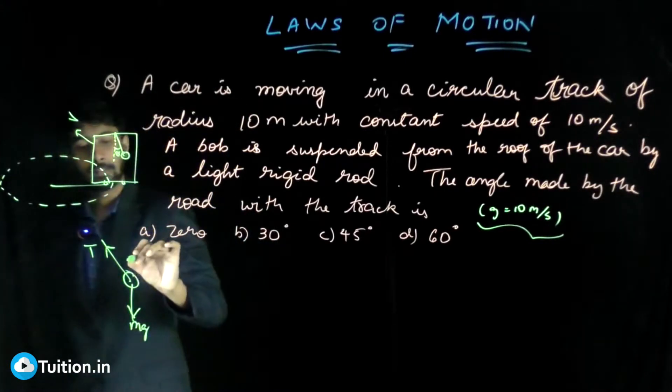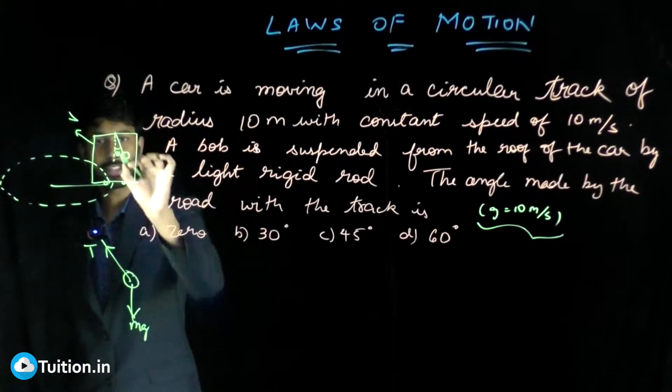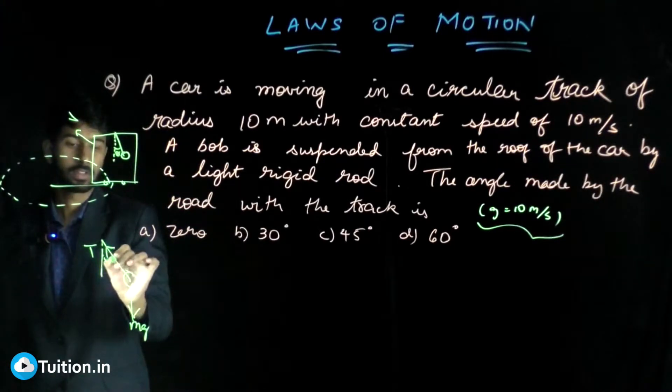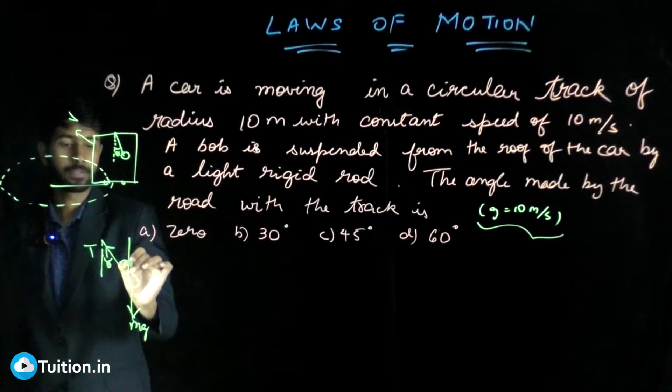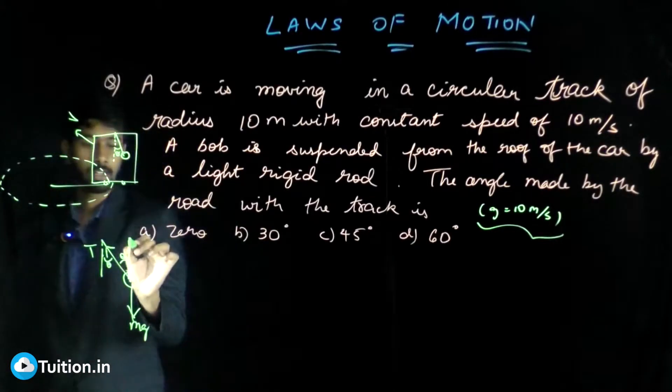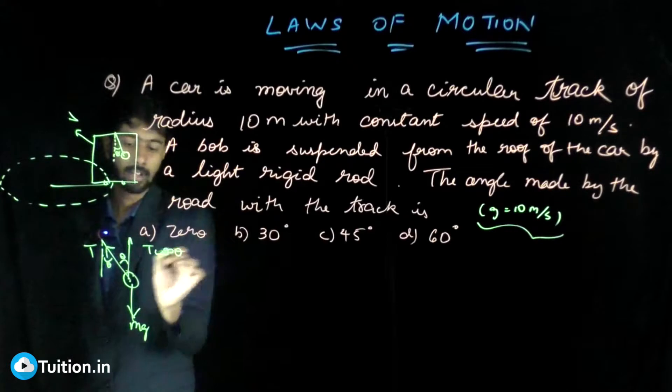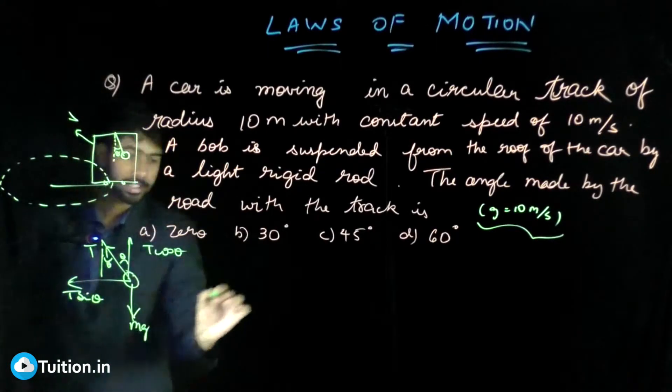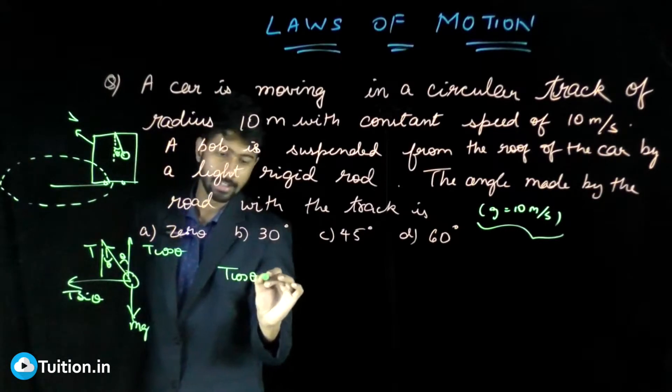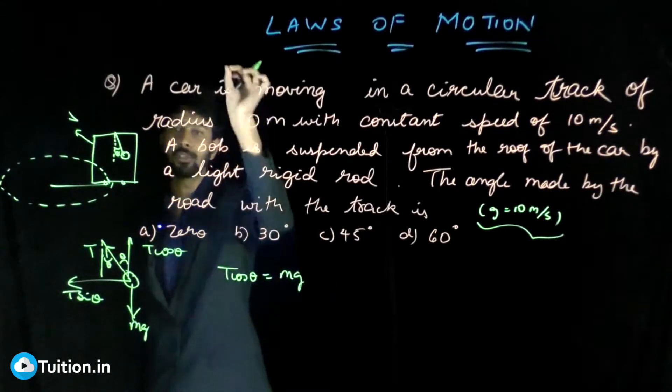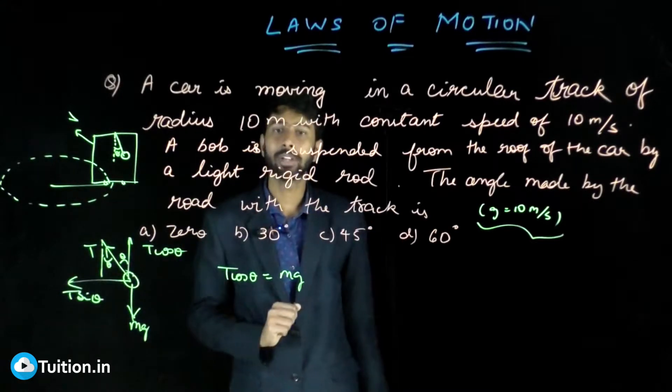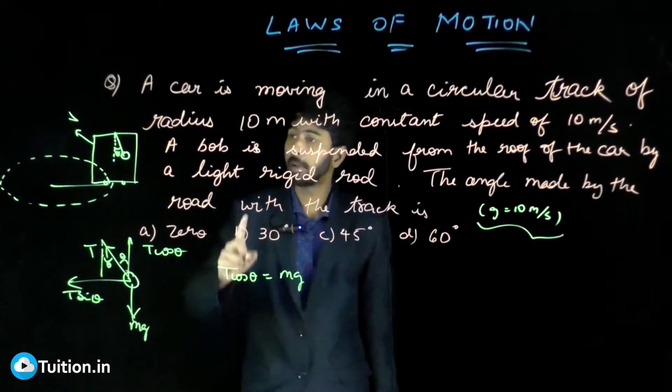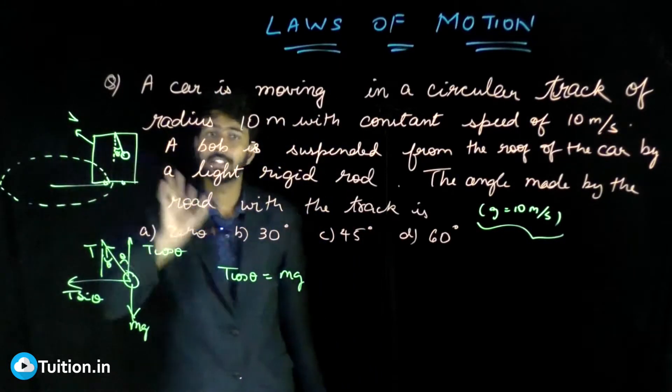If this is theta, then this angle will be theta, and this is T. Then this will be T cos theta and this will be T sin theta. Your T cos theta is balancing mg because the bob is not moving in the vertical direction. What is T sin theta doing? T sin theta is providing the necessary centripetal force for this bob to be in circular motion.